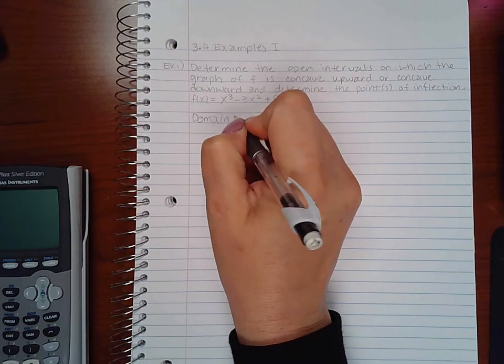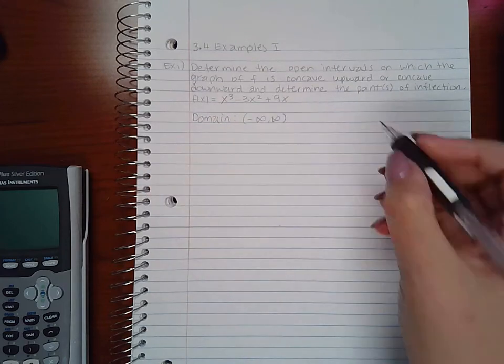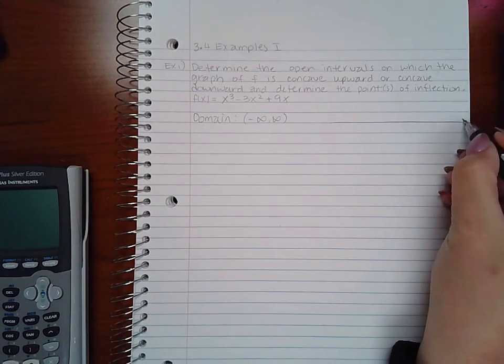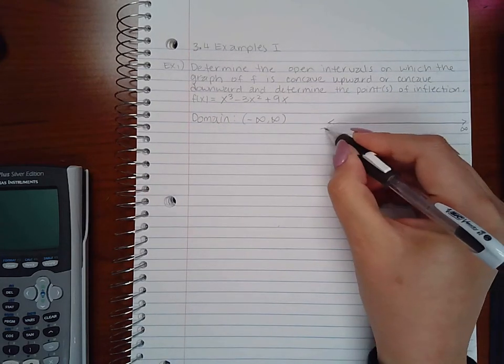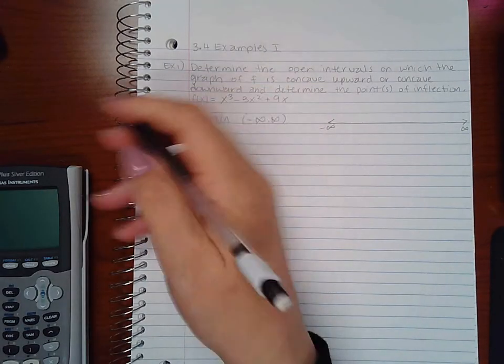The domain of any polynomial is going to be from negative infinity to infinity, which means that my number line is going to go across the whole real number line from negative infinity to infinity.